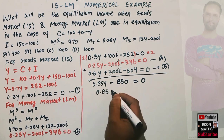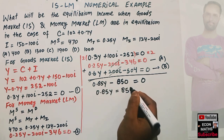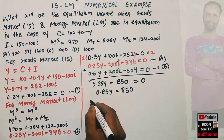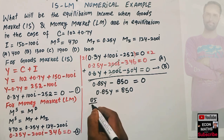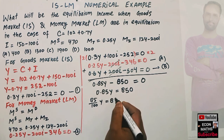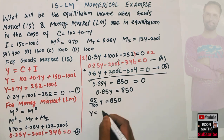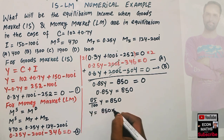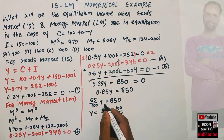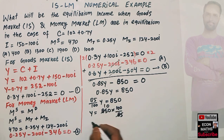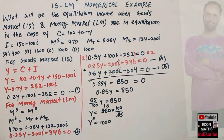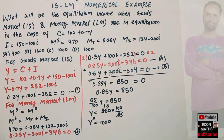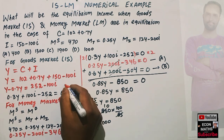Solving for Y: 0.85Y = 850, which can be written as (85/100)Y = 850. Therefore Y = 850 × (100/85) = 1000. The equilibrium level of income is 1000.